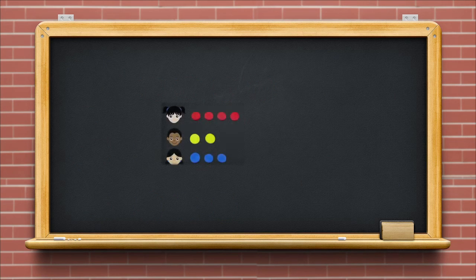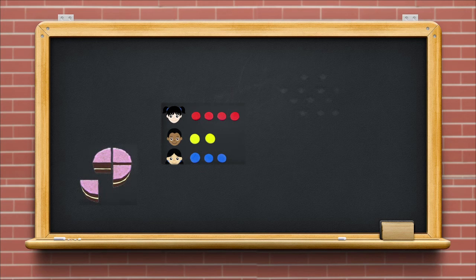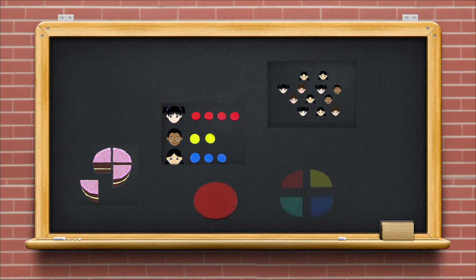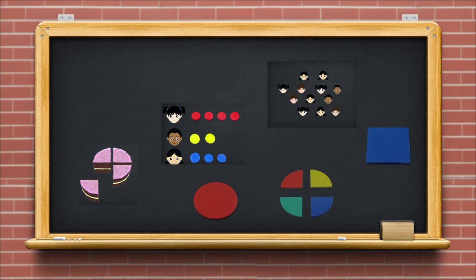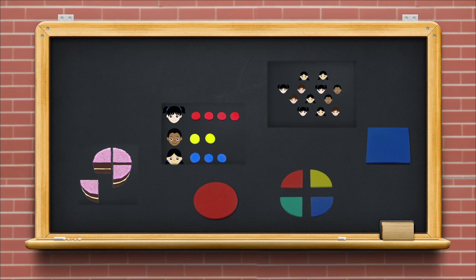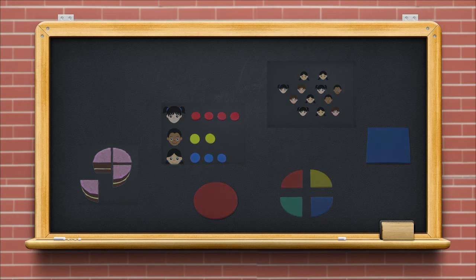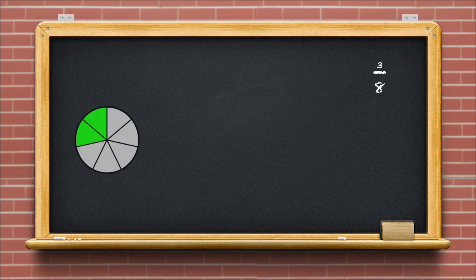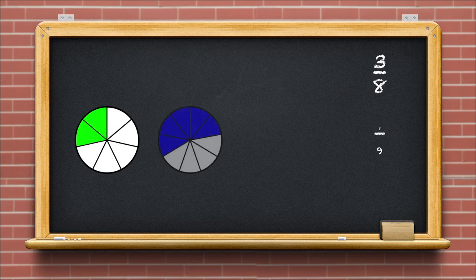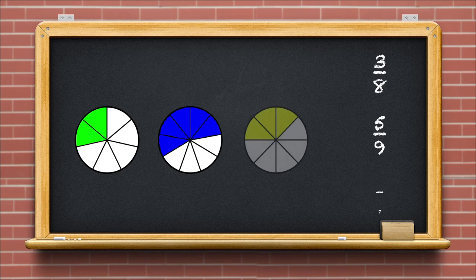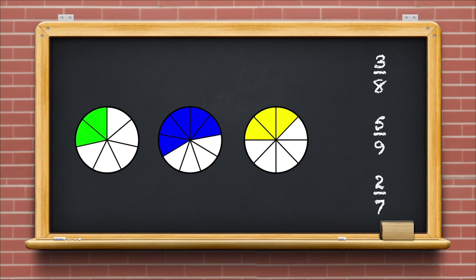Proceed slowly till all students have understood the basic concepts. Your students could try these problems using Akshara's teaching aids to strengthen the basic concepts of fractions. For a quick review, check whether your students can identify 3 upon 8, 5 upon 9, and 2 upon 7 by looking at the colored parts in the figures.